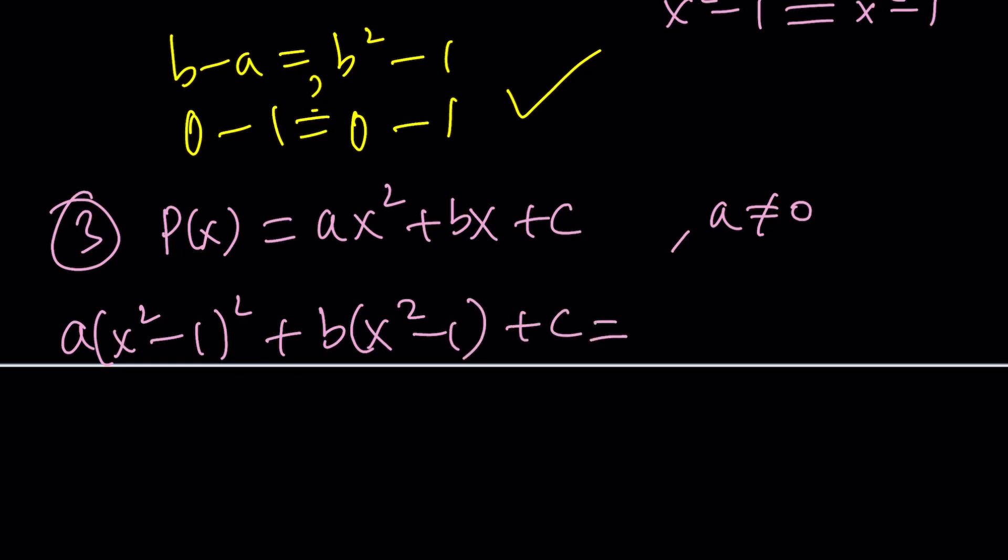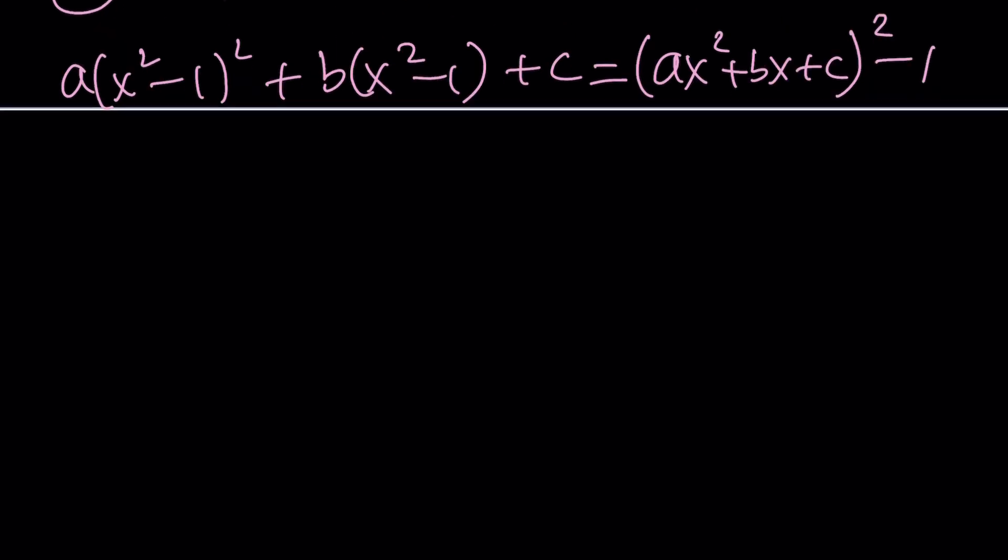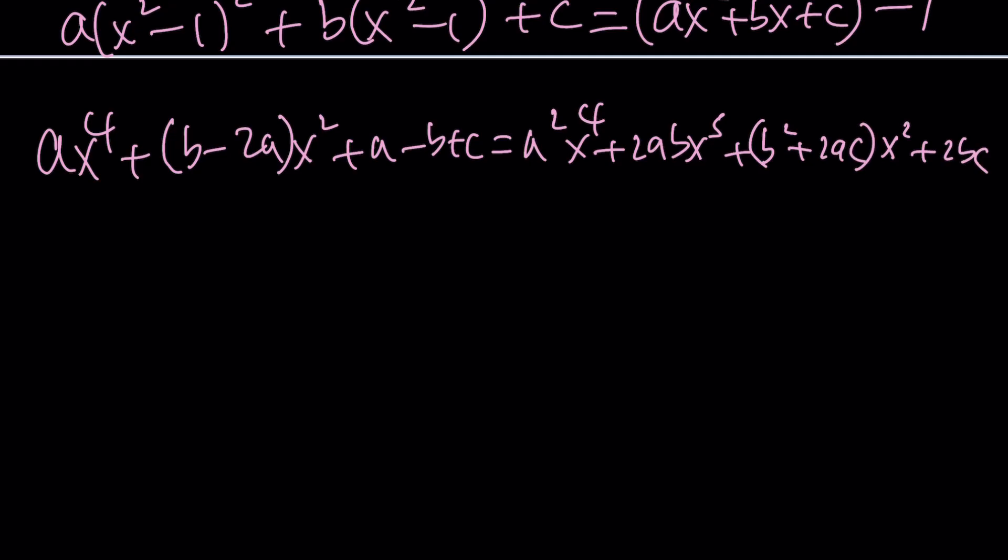This should equal ax squared plus bx plus c, which is p of x squared minus 1. Now, if you expand everything, what are you going to get? You're going to have to arrange some terms, but eventually, you should be getting something like this. And then on the right-hand side, you're going to get the following terms. Kind of hard to fit, but I'll try my best. And it didn't work. Never mind. So I'm going to put these two at the bottom. x squared, and I have the 2bcx minus 1.